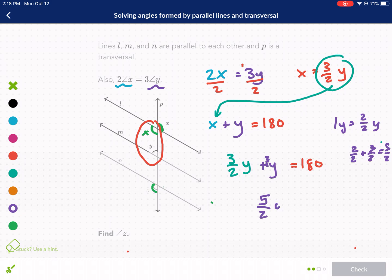So we have five halves y equals 180. And then I just multiply by the reciprocal times two over five times two over five, because that will cancel out leaving us just with y. So we get 360 divided by five, because 180 times two is 360. And we get 72 degrees.